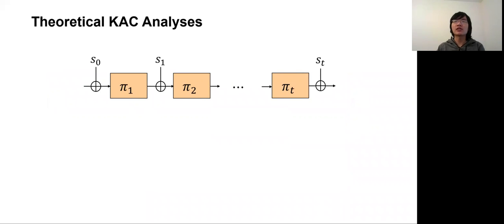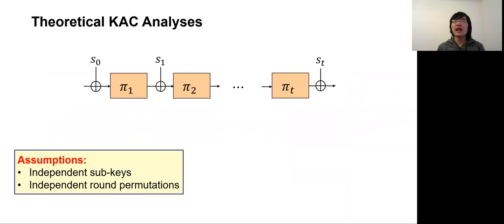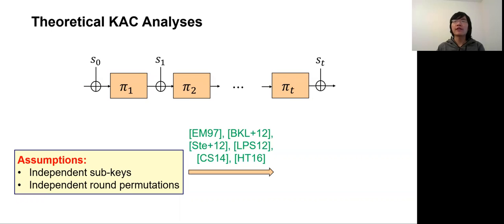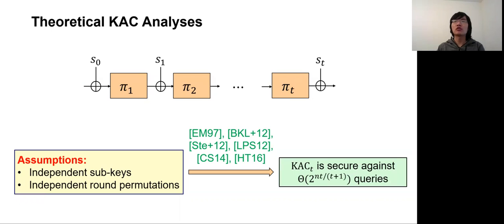Previously, the theoretical analysis of key alternate ciphers relied on two independence assumptions: the subkeys s0 to sd are independent and sampled uniformly at random, and round permutations pi-1 to pi-t are also independent and sampled uniformly at random. After the line of work studying KAC, it was proven that under these two independence assumptions, KAC achieves optimal security, tolerating any adversary that makes at most 2^(nt/(t+1)) queries, counting both queries to the cipher construction and queries to the public permutations pi-1 to pi-t.